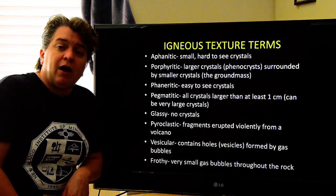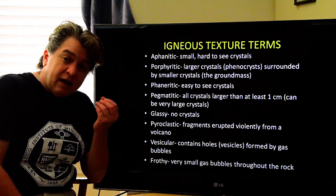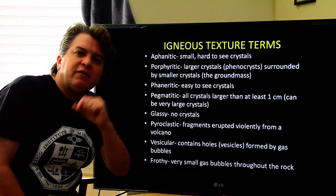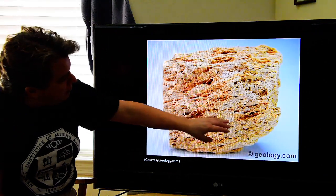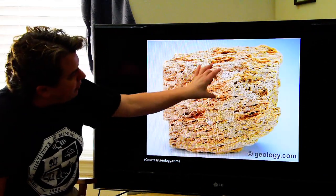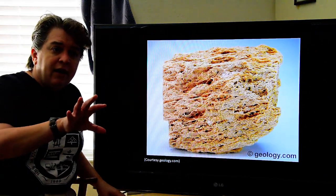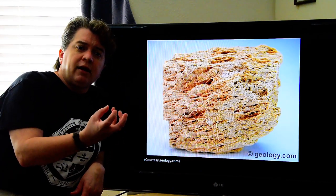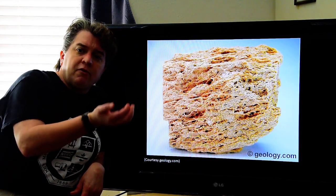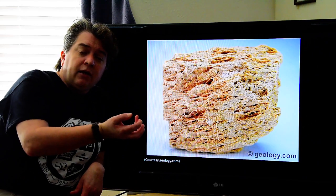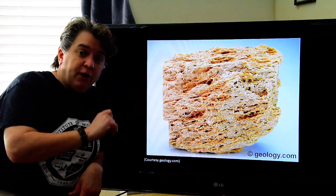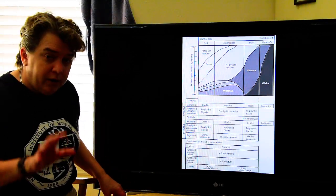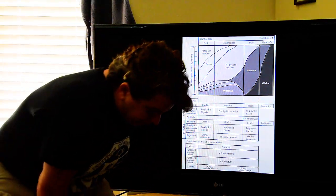Lastly, we can have something described as frothy. This also has gas bubbles, but there are going to be thousands of tiny little gas bubbles. In fact, in frothy volcanic rocks, there are so many little gas bubbles trapped in there that the rock feels really really light, and in many cases will float on water.